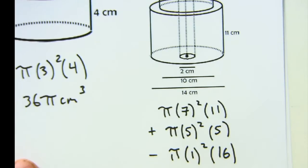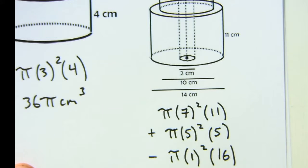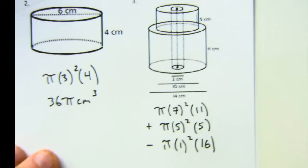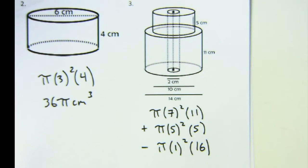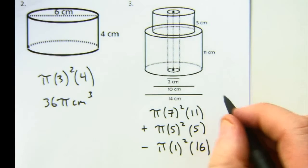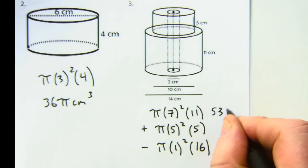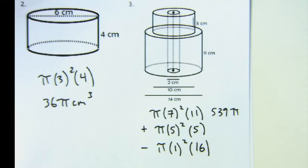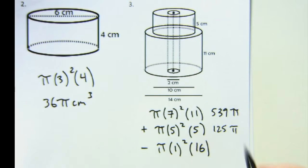And you would combine all three of those values to get your answer. So 49 times 11 is 539 pi. 25 times 5 is 125 pi. And this is just minus 16 pi.